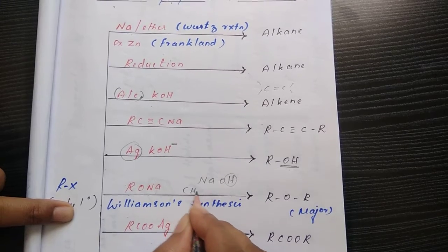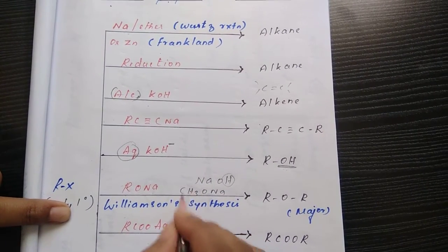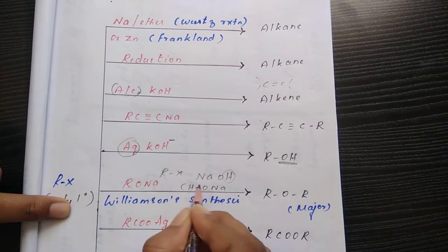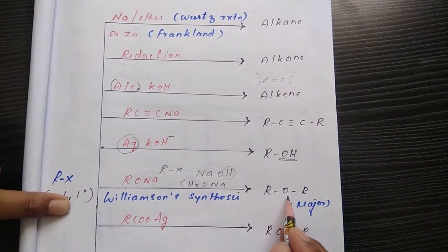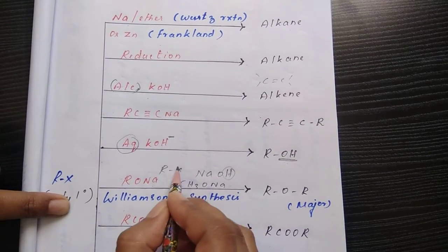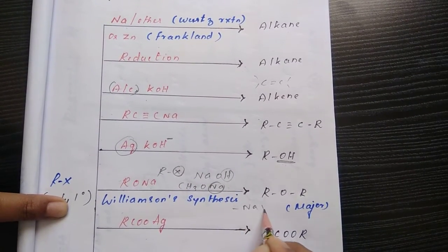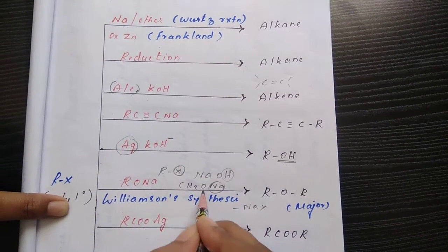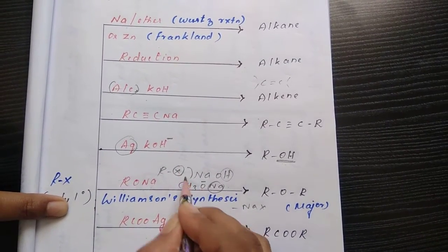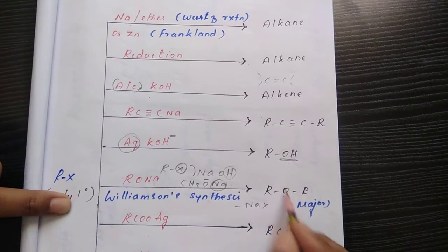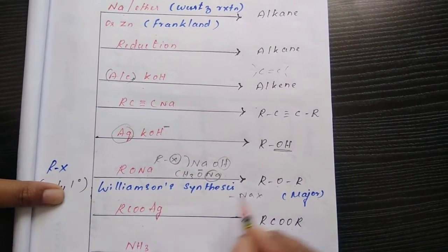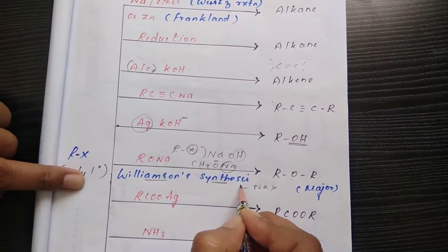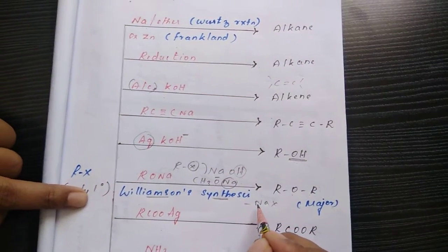If we have CH3ONa, it means sodium methoxide. If it reacts with RX, we get ether preparation. NaX is removed. We get OCH3 attached here. Instead of X, this nucleophile will replace. So we get ethers, ROR ether as a major product. This is a well-named reaction, Williamson synthesis. The following reactions we will discuss in the next session.